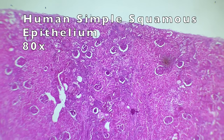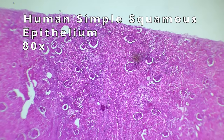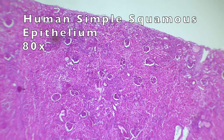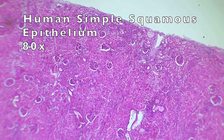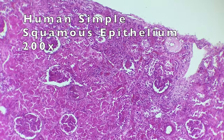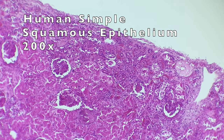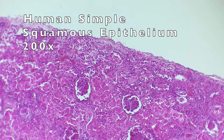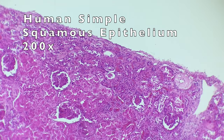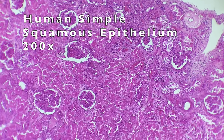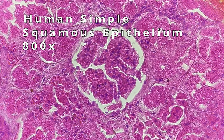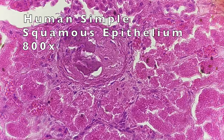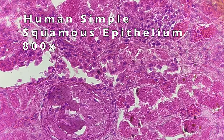Now we have simple squamous epithelium. I'm really not sure what part of the body we are looking at here. Simple squamous epithelium can be found in the lungs around the alveoli, but that can't be what we're looking at because there would be many open gaps. It's also found in the kidney, but this looks vastly different from the kidney. Around this central structure with the gap around it, that is where we would find the simple squamous tissue.